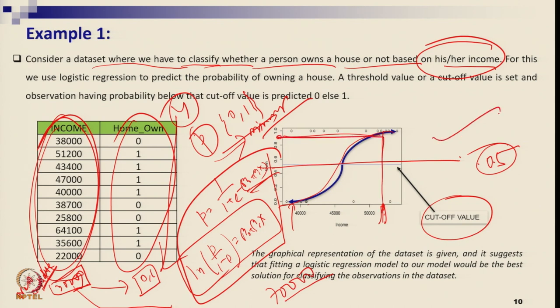With a cutoff point of 0.5, we can say that a person with 70,000 income has a high probability of owning their own home. This way you apply logistic regression — the probability ranges from 0 to 1, and based on the cutoff, you classify the outcome into two categories: yes or no. For any new candidate with 30,000 or 70,000 income, you can predict whether they will own a home.